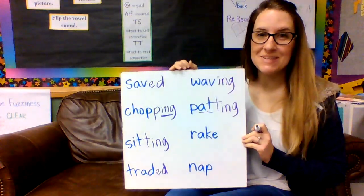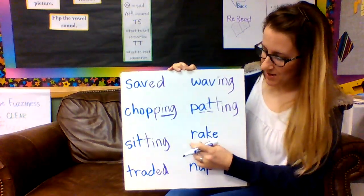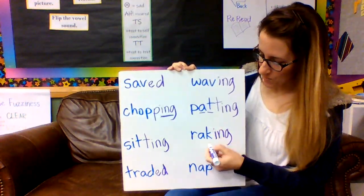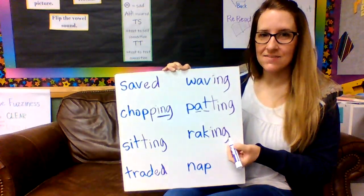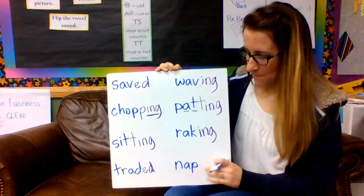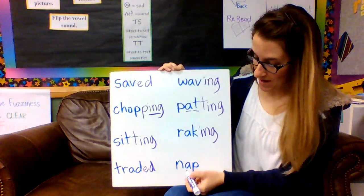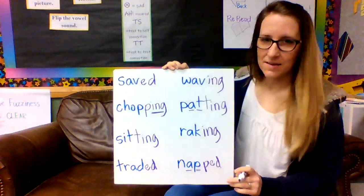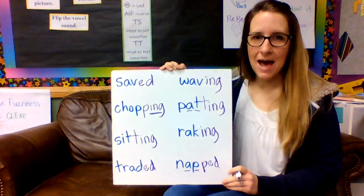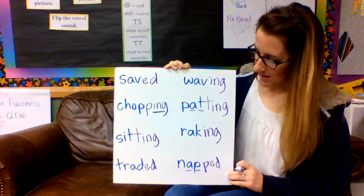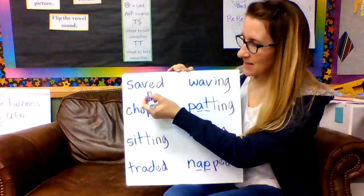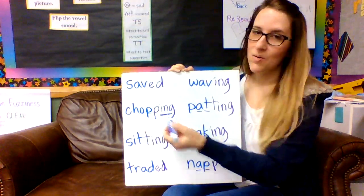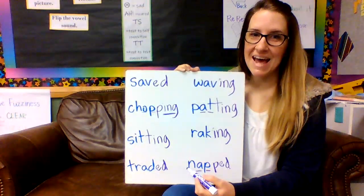Just two more examples. Rake — I need to drop that E and then I can add my word ending: raking. I am raking the leaves. And last, nap — I only see one vowel and one consonant, so I need to double up that P and then add -ed: napped. Yesterday I napped on the couch. So keep in mind: when there's a silent E, we drop it before adding -ing or -ed. And if there's just one vowel and one consonant, we double up that final consonant before adding -ed or -ing.